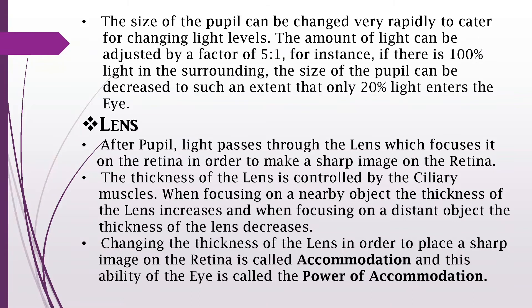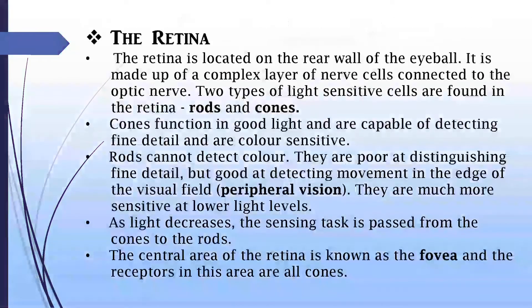The lens. After the pupil, light passes through the lens which focuses the light on the retina to make a sharp image. Thickness of the lens is controlled by the ciliary muscles surrounding the lens. Thickness of the lens increases and decreases when focusing on nearby and distant objects respectively, and this is called accommodation.